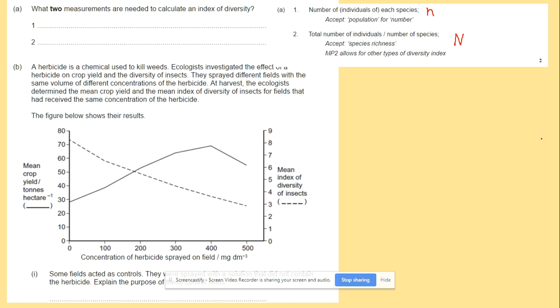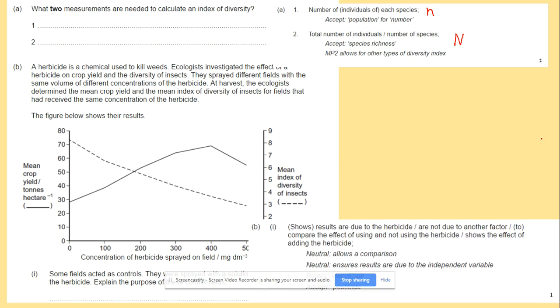And here we need to explain the purpose of this question. Obviously we've got the figure as well. In here, obviously, we will be looking at the results are due to the herbicides. They are not due to another factor. So they show you the effect of adding the herbicides on this population.